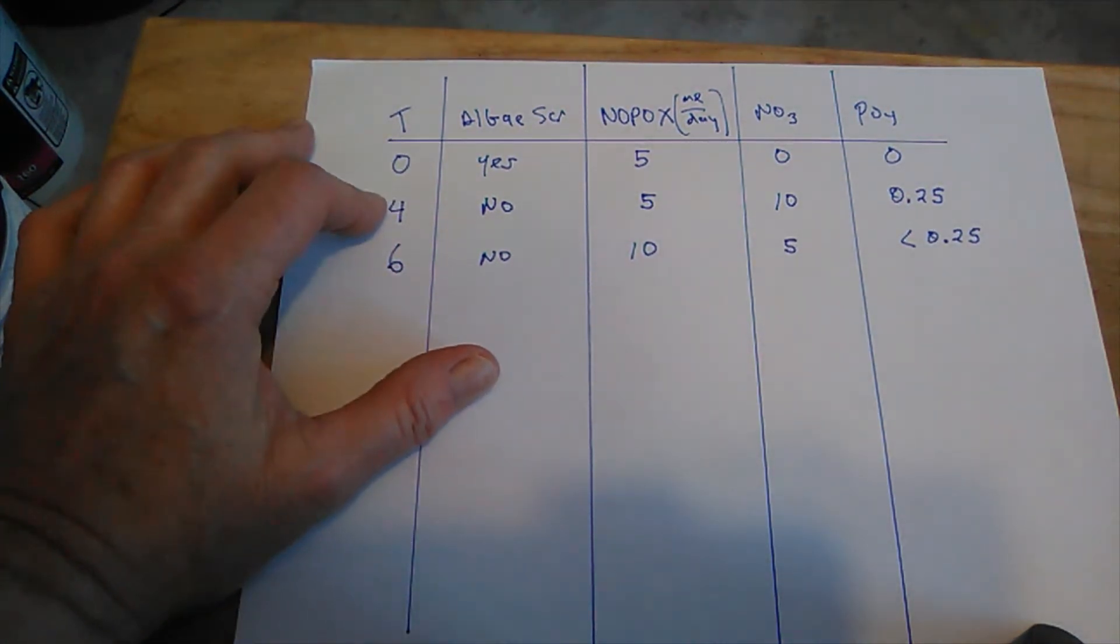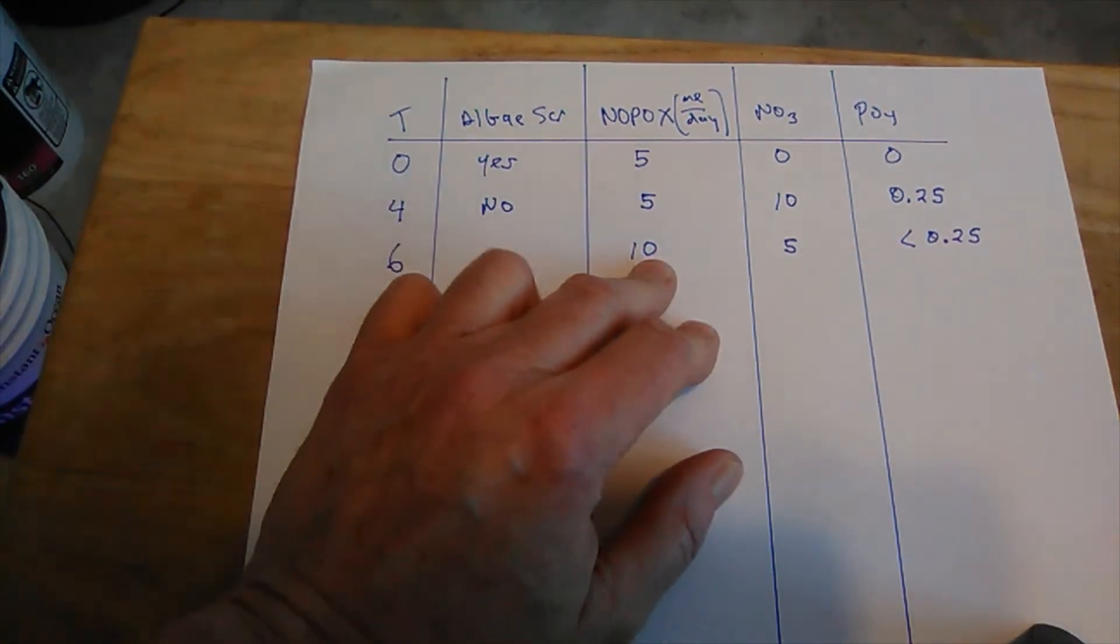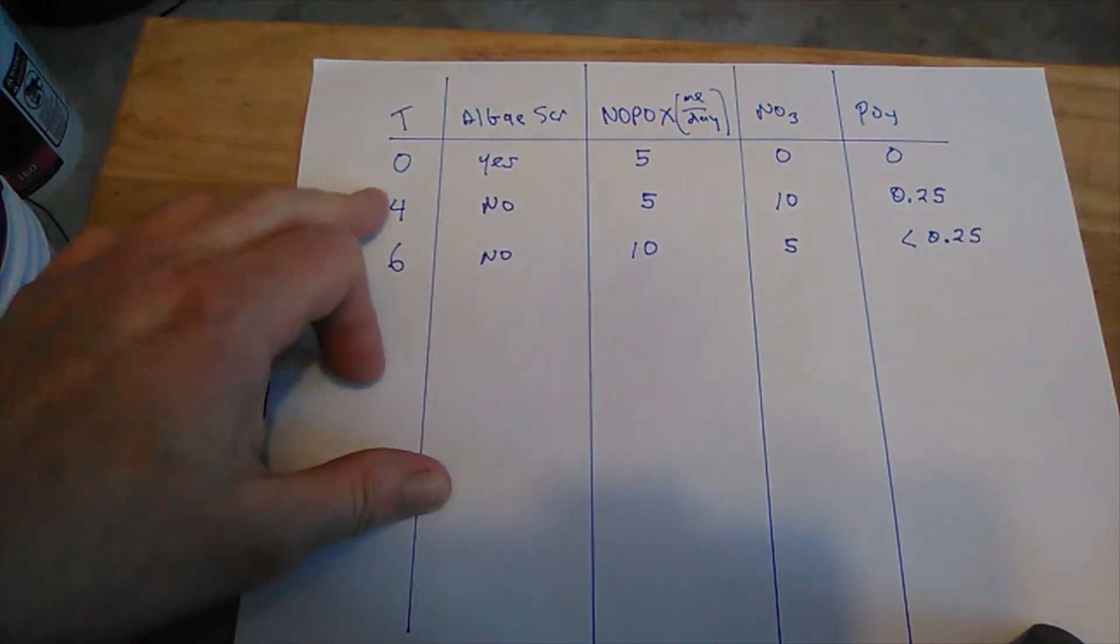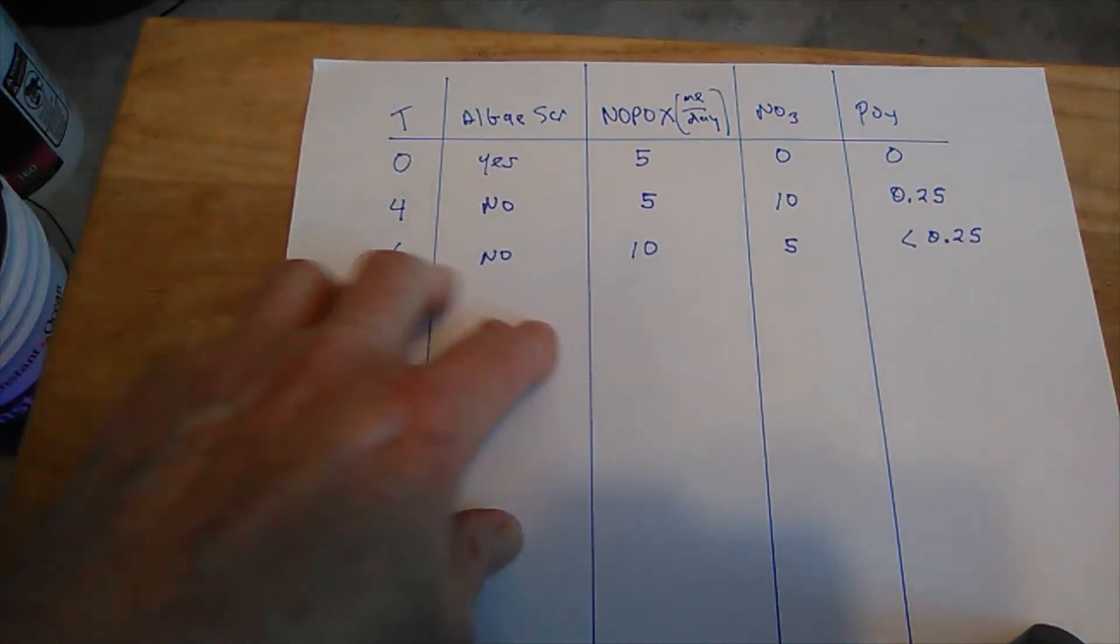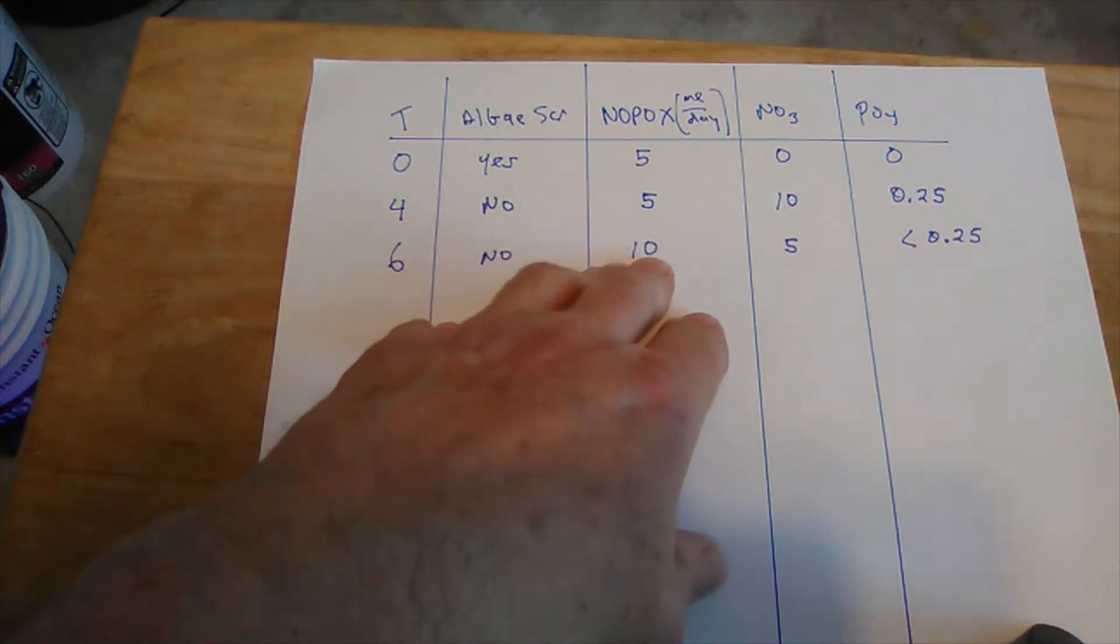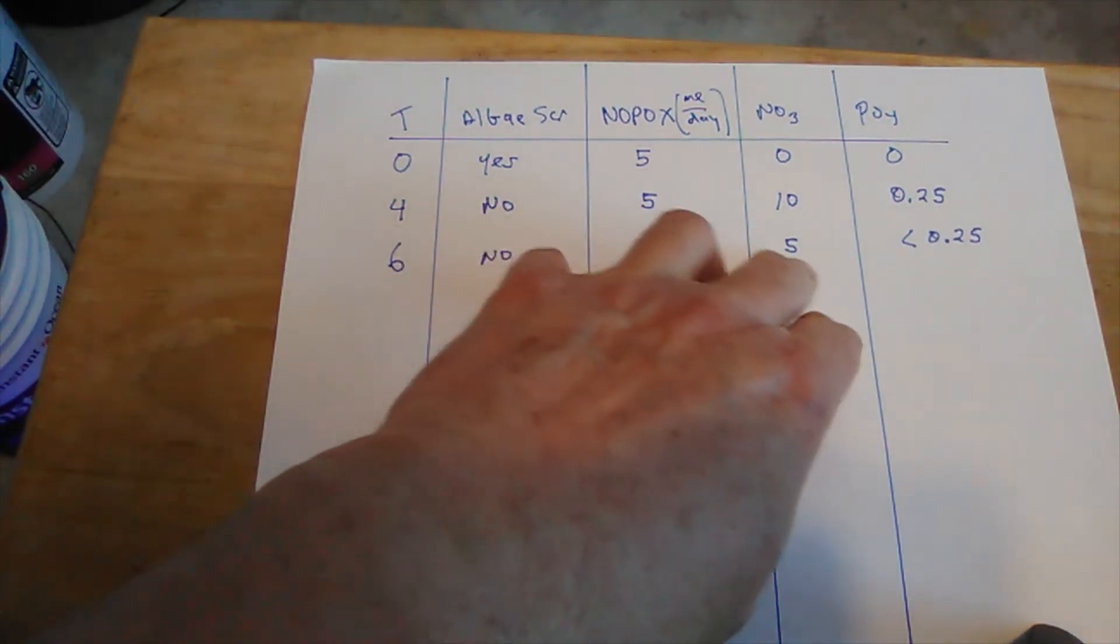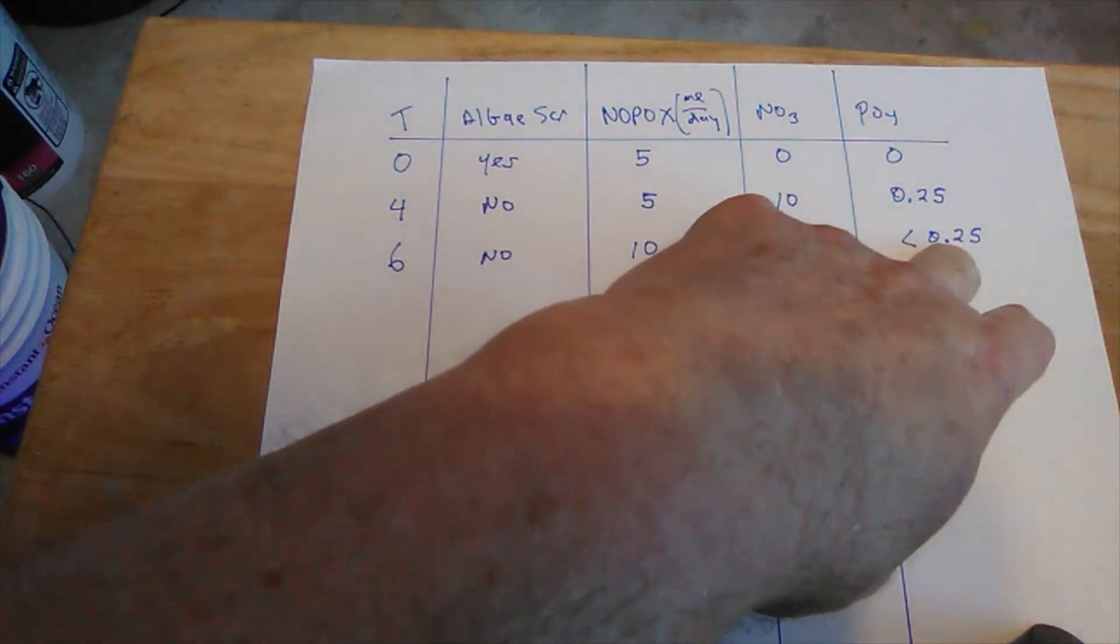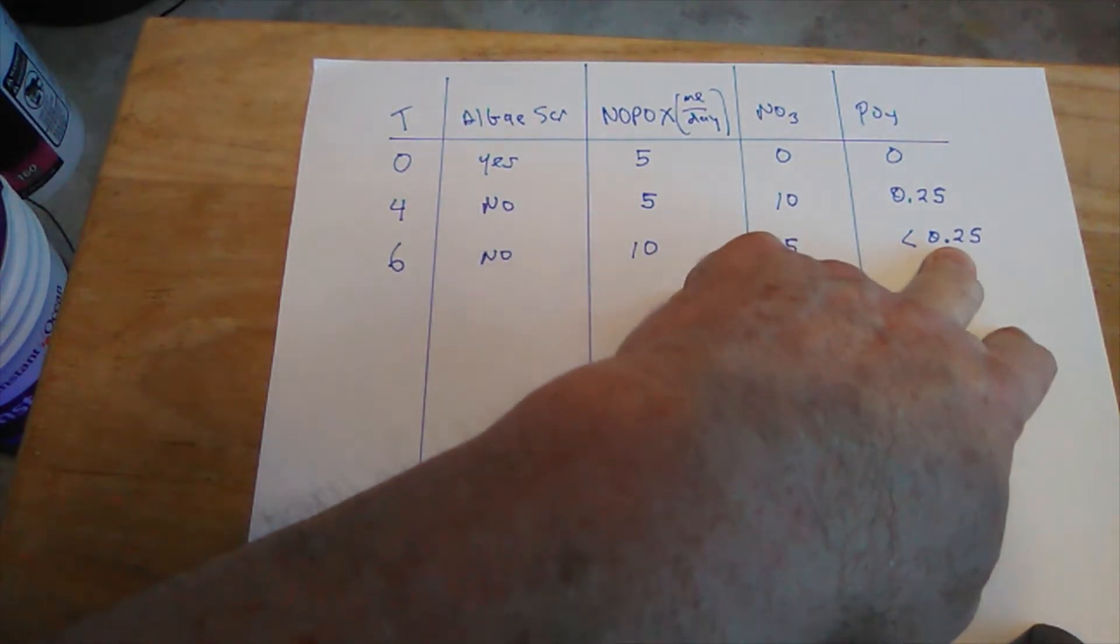So I said, I want to continue this experiment. Right after this, I started dosing 10 milliliters per day of NOPOX. There's still no algae scrubber running. So two weeks later, which is today, there's no algae scrubber. The NOPOX has been at 10 milliliters per day for two weeks. And I just got a reading of 5 for nitrates and 0.25 for the phosphate.